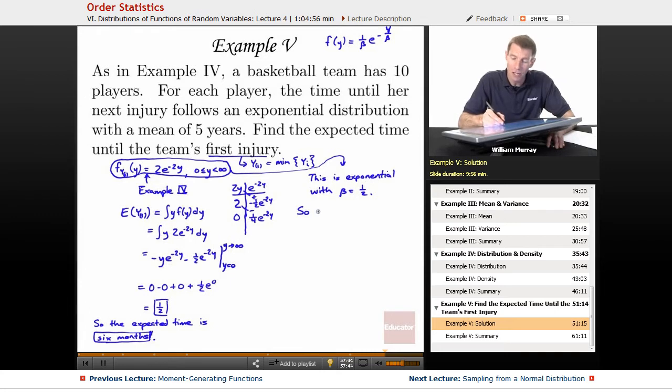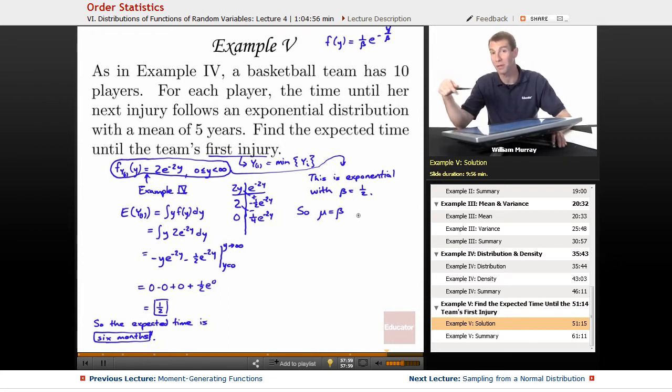So, the expected value of the exponential distribution, the mean of the exponential distribution, is beta. This is a property we learned about the exponential distribution long ago when we were studying the gamma distribution. That was because the exponential distribution was a special case of the gamma family. So, mu equals beta is one half, and that's really all we needed to do if we had noticed that. We could have saved ourselves from walking through that long integration by parts. It's really useful to recognize a distribution if it does fall into one of your known families.